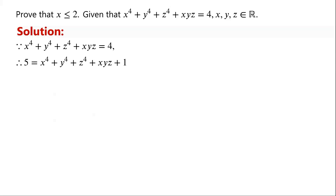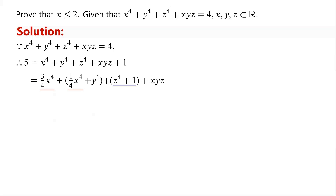x to the power of 4 can be written as three-quarters times x to the power of 4, plus a quarter times x to the power of 4. Then plus y to the power of 4, plus z to the power of 4, plus 1, plus xyz. We will use the inequality of arithmetic and geometric means.